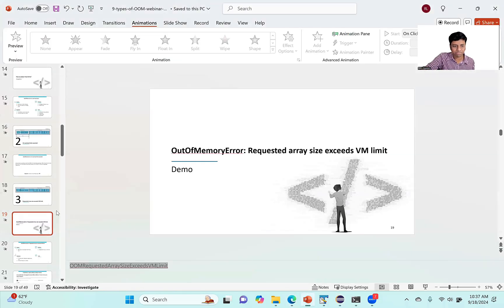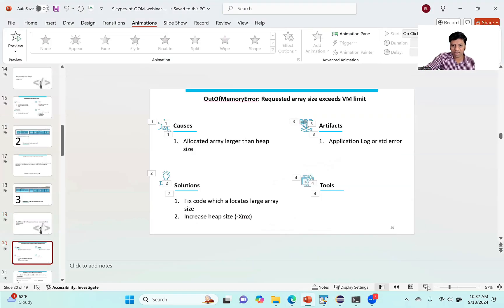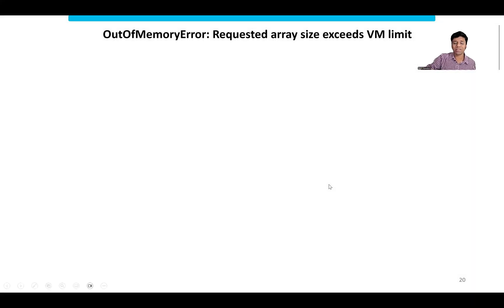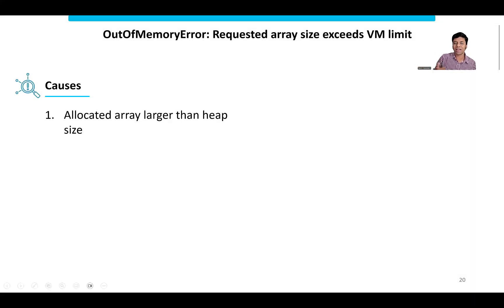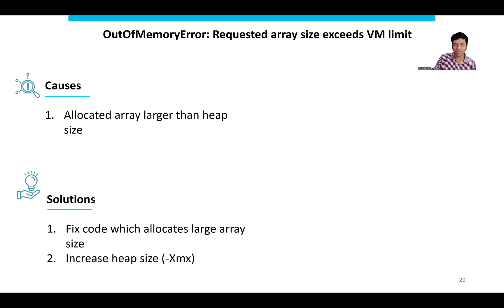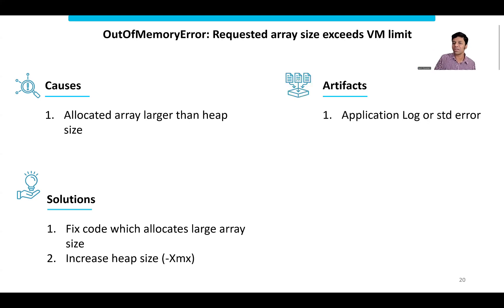When this error happens, look at the stack trace in your log — it precisely points to the class, method, and line. Go to that line and see what integer array you're creating, and whether it's a legitimate case. If not, reduce the size. The solution is to fix the code or, if there's a legitimate need, increase XMX. The artifact needed is just the application log — no tools required because the error is directly visible in the log.